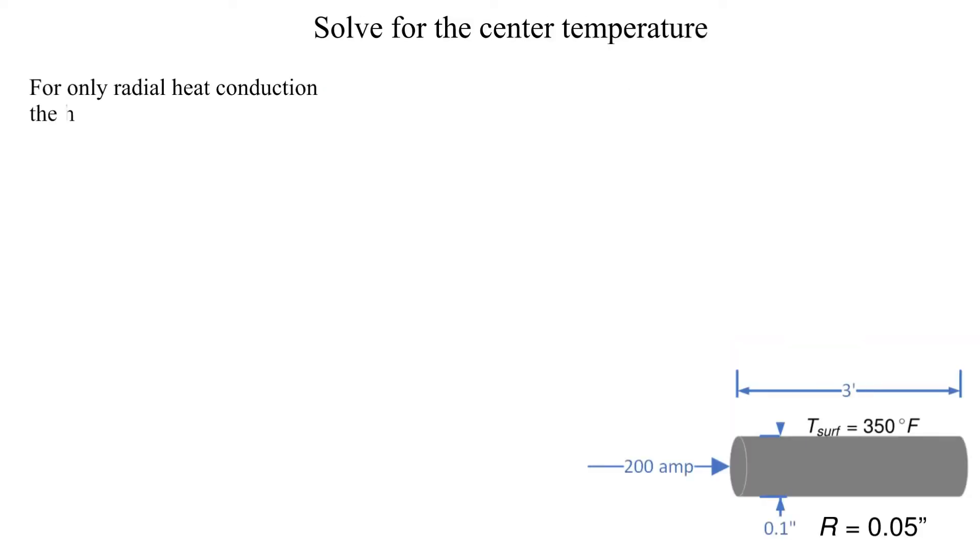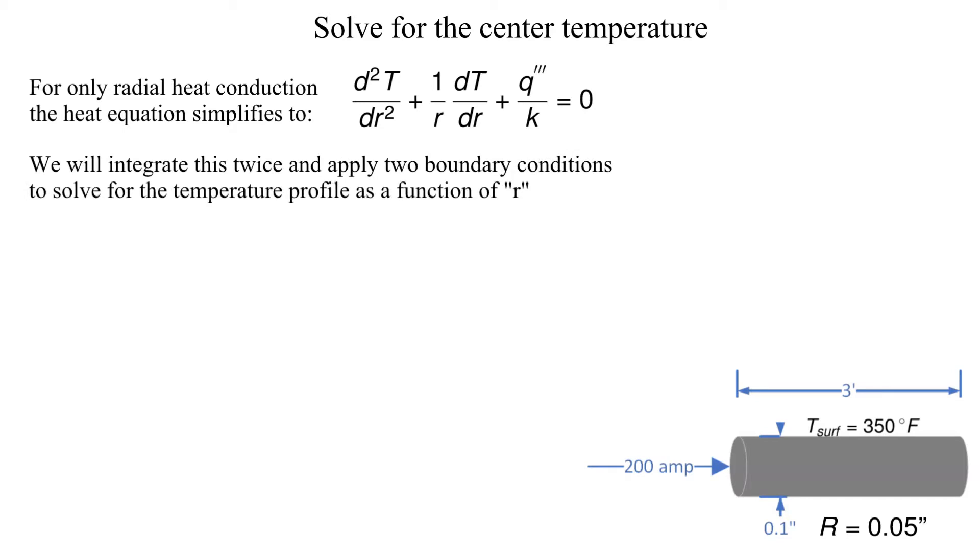The heat conduction equation for radial heat conduction with uniform volumetric heat generation will be integrated twice. Two boundary conditions will be applied to determine the integration constants.